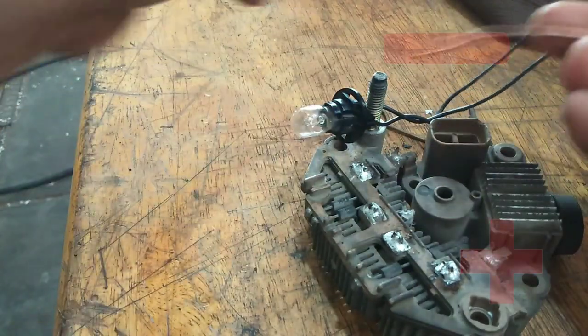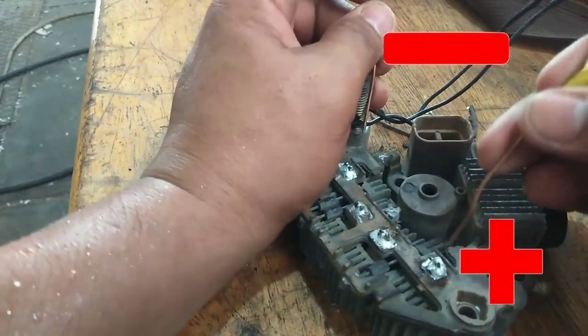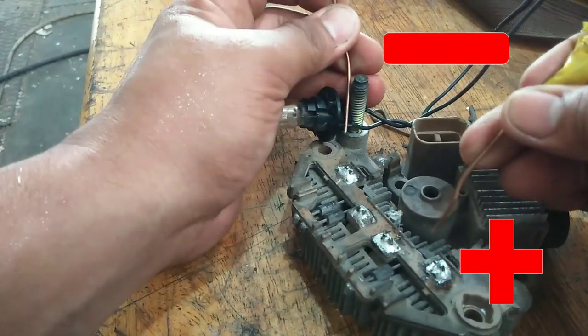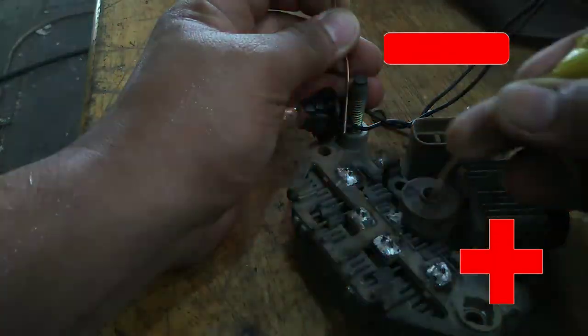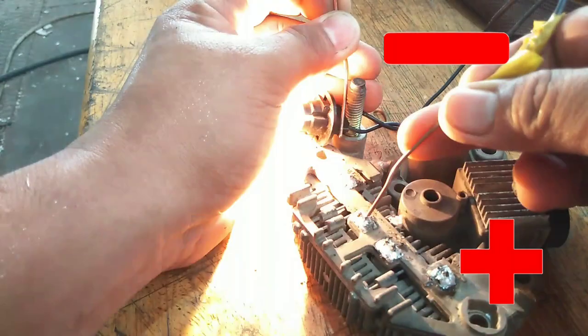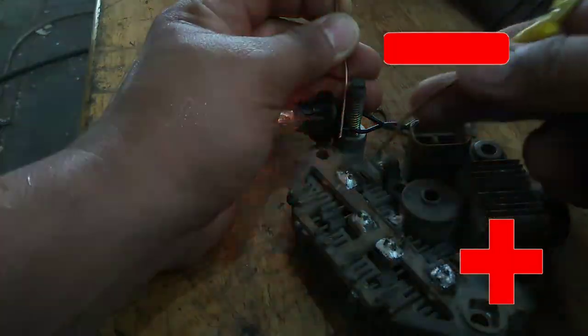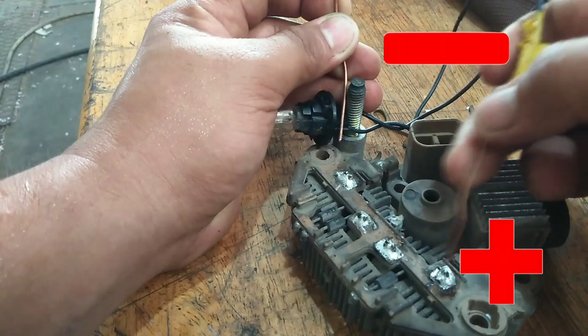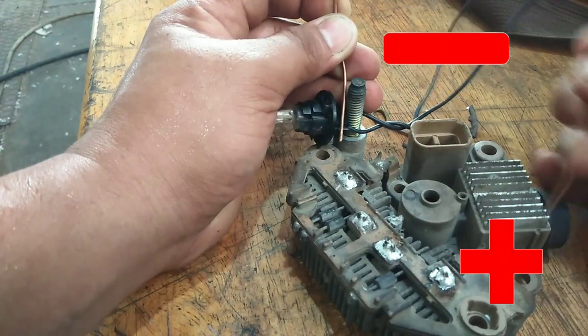So now we reverse the polarity of the battery terminal. Now we observe that the light has a reaction when we reverse the probe terminals. This shows that our rectifier assembly is good and has no leaks.